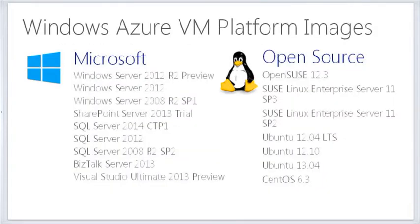Looking at what we have in the Azure platform images — what we're running on top of is Hyper-V, so things that work in Hyper-V work up here. We have platform images pre-built: the current Microsoft Server 2012 and 2012 R2 — this deck says preview for R2, but it's actually been updated to the full RTM version — and then different versions of Unix. You can also create your own image and upload it into Azure, which we'll be doing in the lab today.